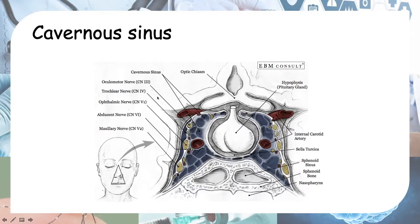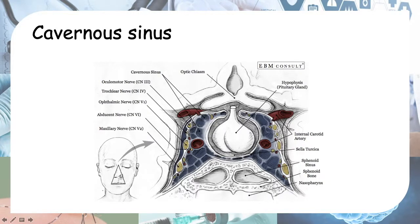The other function of cranial nerve 3 is the pupillary constrictors. If cranial nerve 3 is affected, the pupil on the affected side will be dilated and will not respond to light. Normally when you shine light into the eye, the pupil constricts, but in this case that pupillary reflex is absent and the pupil remains large.